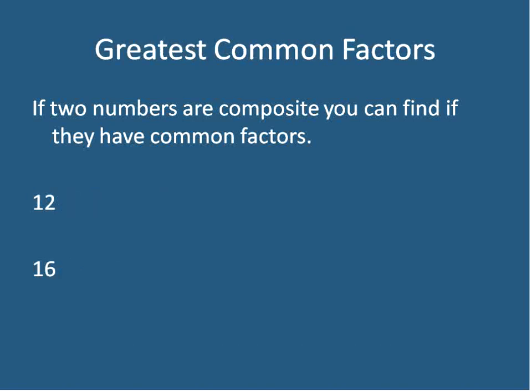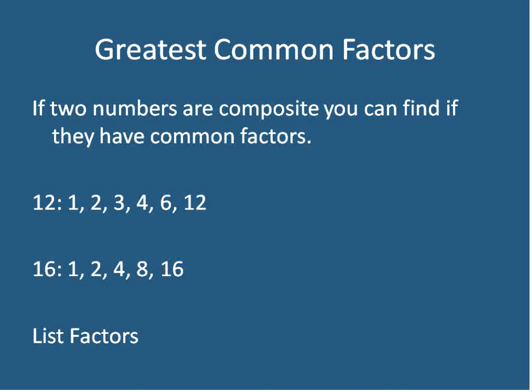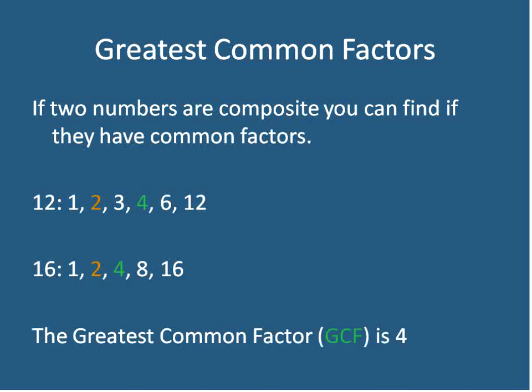When we're asked to find a greatest common factor, that's when we have two numbers that are both composite — they both have factors. We want to find all of the factors first, list them, discover any that are common, and the greatest common factor would be the largest of those common factors.